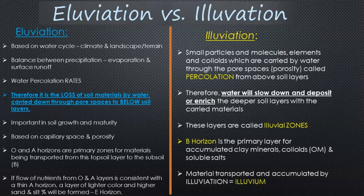Does it go into the soil through infiltration and percolation through pores and spaces? Does it evaporate on the surface through puddles and reservoir deposits, or does it flow over the land based on gradient and slope? We're looking at climate, landscape, and how water moves through the soil. Water is a fantastic medium for carrying material, as we know from hydrology and the oceans.